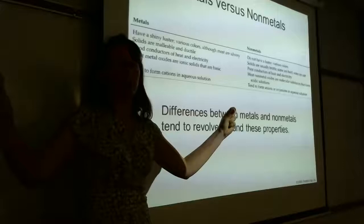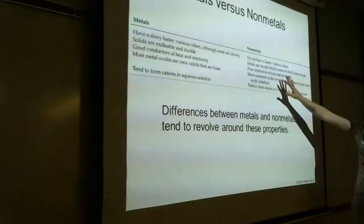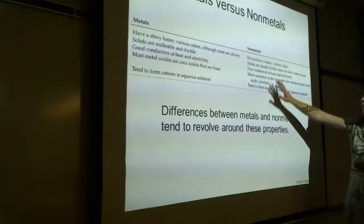Properties of metals versus non-metals — think of the stereotypical classic metal: aluminum foil. It has all the properties of a metal. It's shiny, solid at room temperature, malleable — it can be hammered into a sheet — ductile — it can be drawn into a wire — and it's a good conductor of heat and electricity.